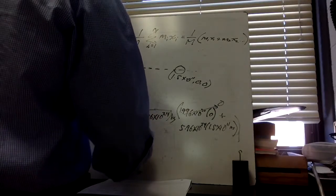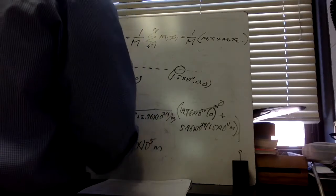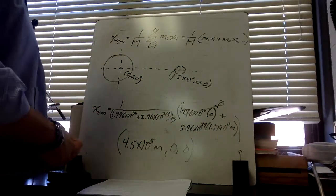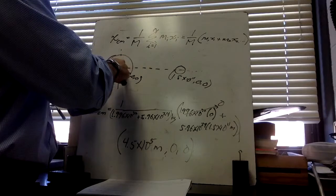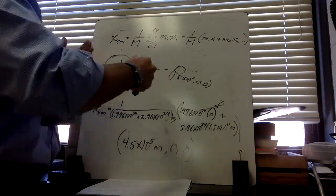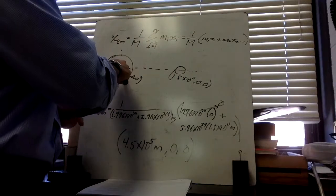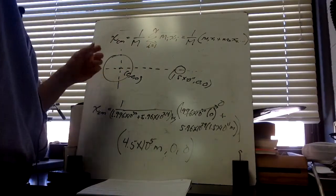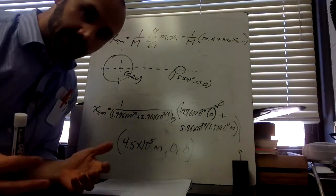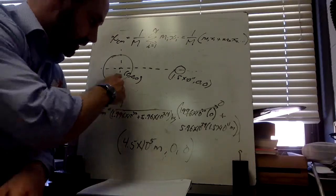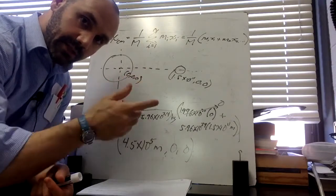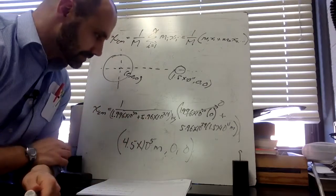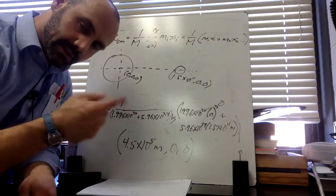This comes out to about 4.5 × 10⁵ meters. This is actually interesting — this distance is less than the radius of the Sun, so the center of mass of the entire system is still within the Sun. The Earth and Sun would revolve around this common center, causing the Sun to wobble slightly. This is actually how exoplanets are discovered: by detecting the wobble of a distant star, astronomers can calculate the mass and distance of orbiting planets.